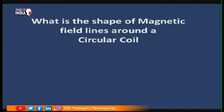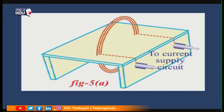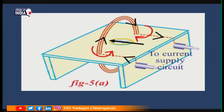Now let us see the magnetic field produced by a coil. Instead of a straight wire, if we bend the wire into a circle, the magnetic field produced inside it behaves as follows. Around the circular coil, at each and every point there will be a magnetic field. Exactly at the center, the magnetic field will be perpendicular to the plane and along the axis of the coil.